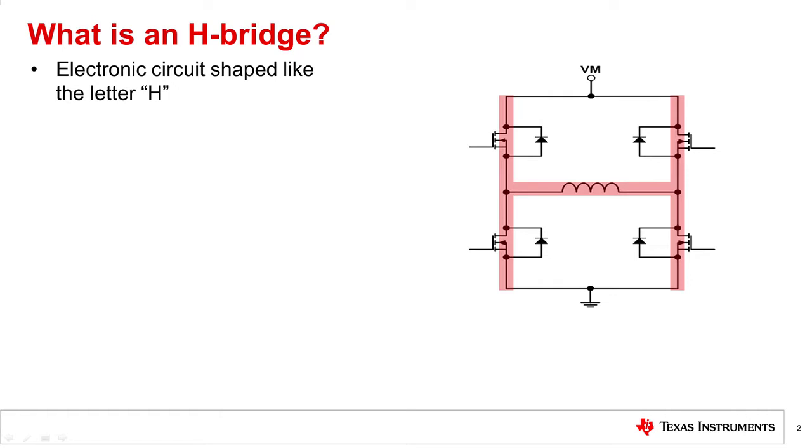The H-bridge is an electronic circuit that looks like the letter H. An H-bridge is used to drive a load such as a brushed DC motor in both directions and it controls the flow of current to a load.